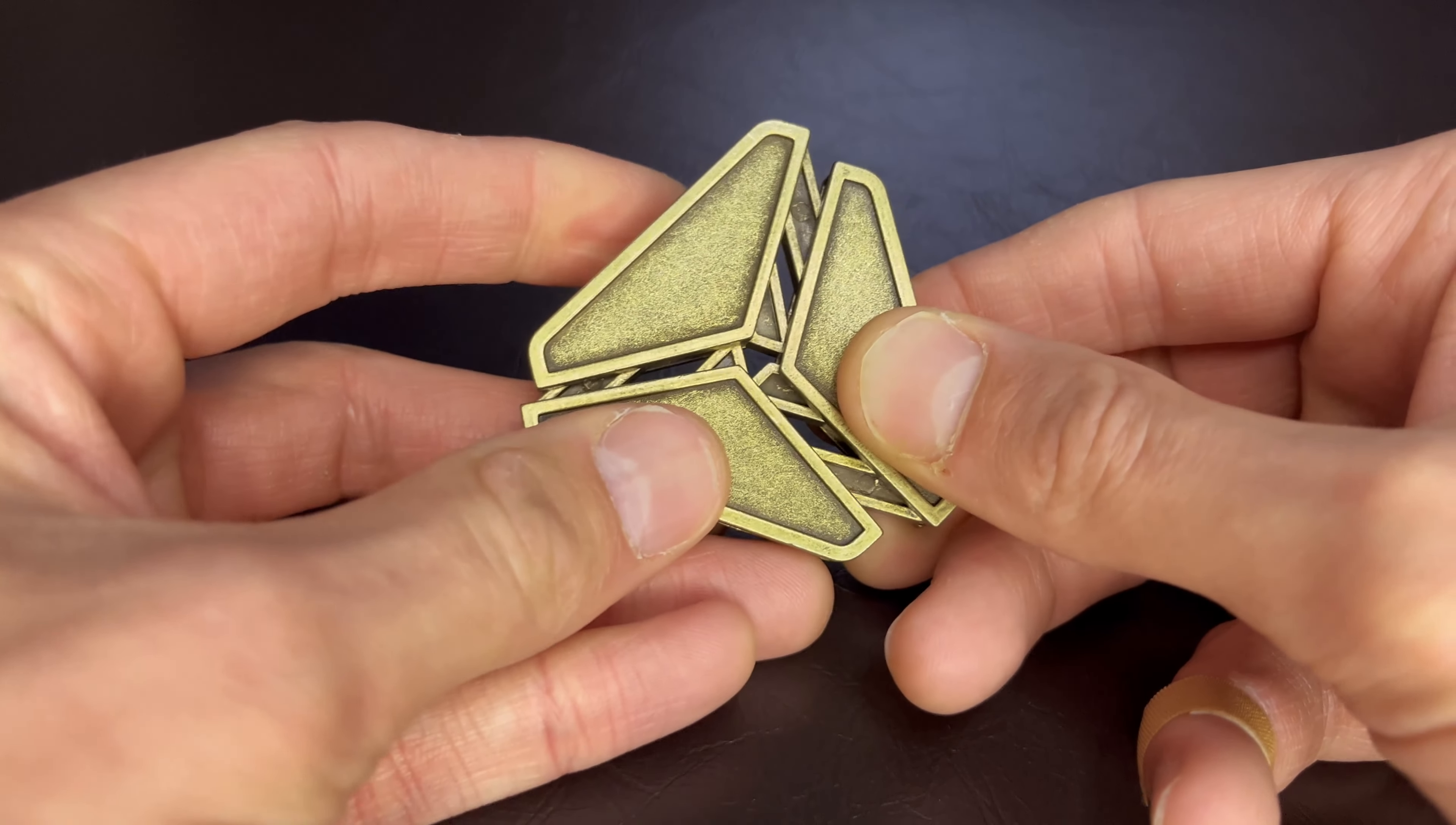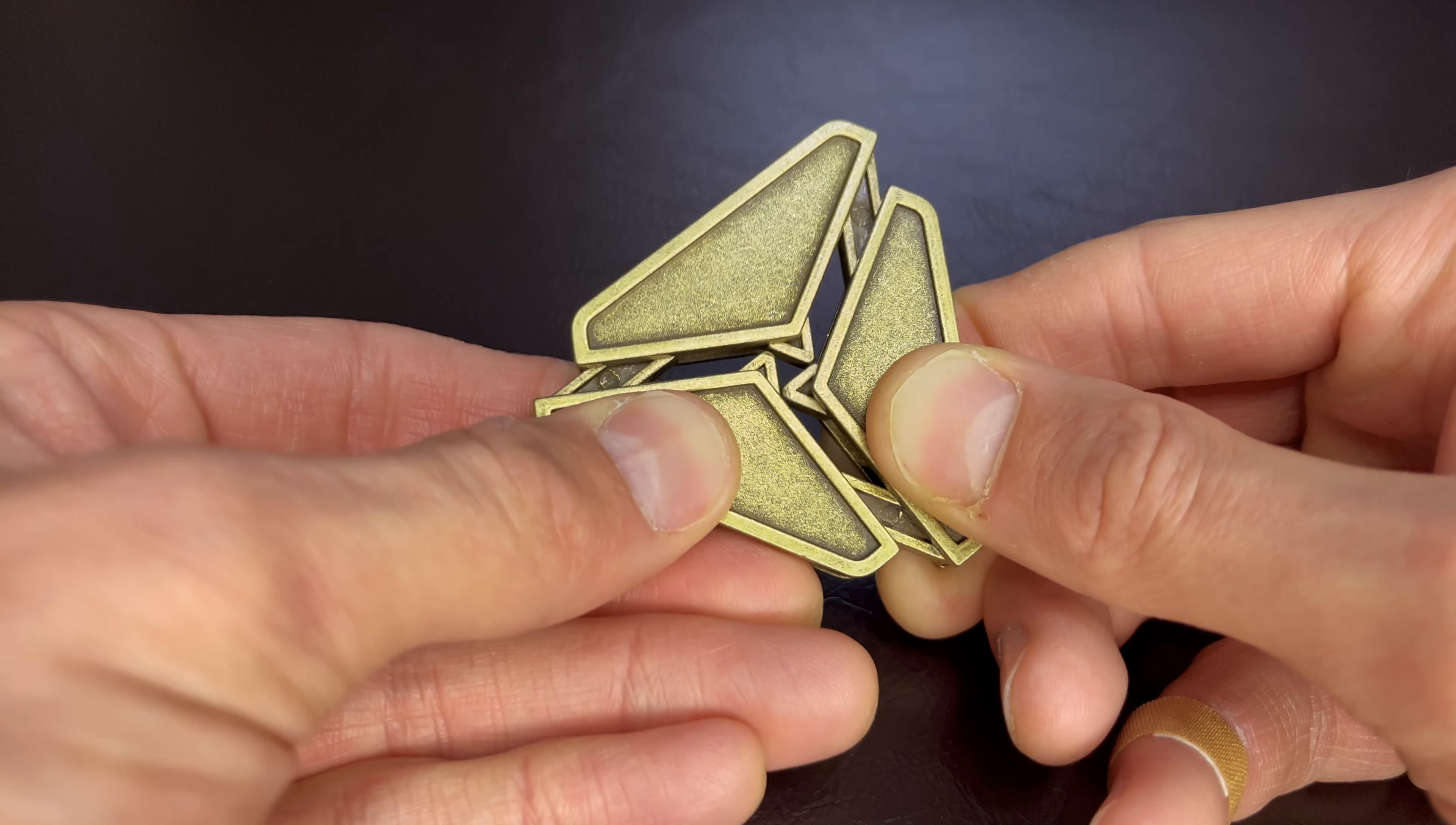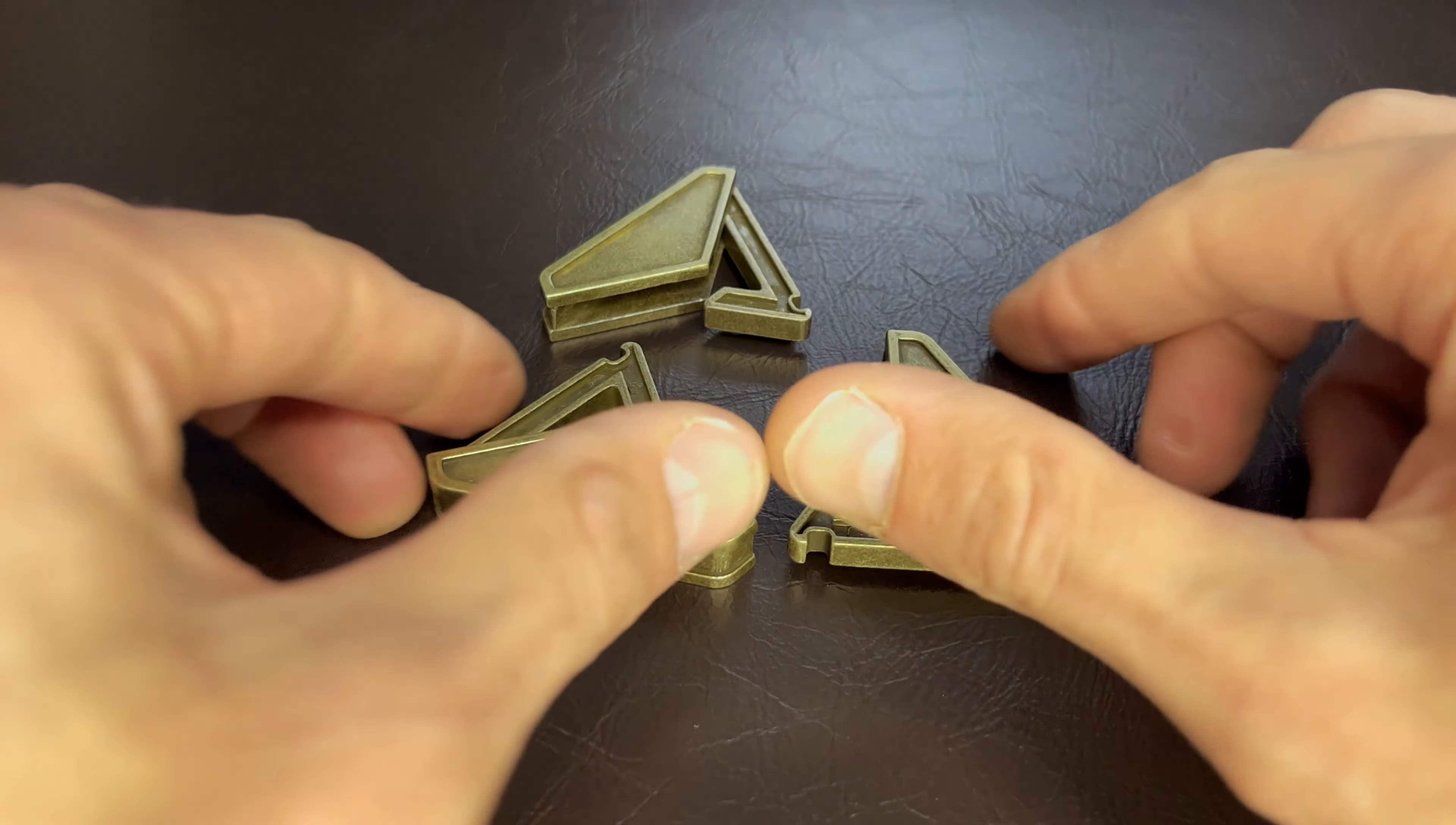There we go. So it kind of makes those triangles in the middle there and then wiggle it around. There we go, just pull. There we go. Now let's see if we can put this thing back together.